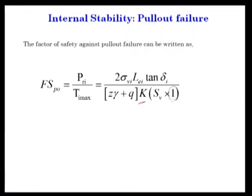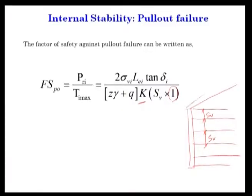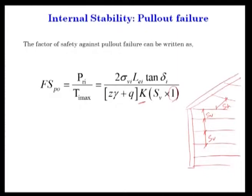The Sh becomes 1 because in design we take per-meter length — that is, 1 meter in the length direction. If this is the retaining wall, with vertical spacing Sv and horizontal spacing Sh, we generally consider per unit meter length, which is why Sh becomes 1.